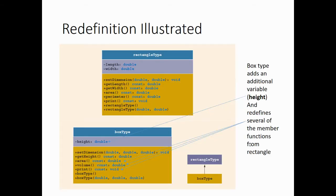For redefinition, imagine that we have a rectangle, and a specialized type of rectangle is a box. Box type has everything that rectangle type has but adds an additional variable, height. It redefines several of the member functions from a rectangle — we would calculate area differently, make a new member function for volume, and print a box differently than we print a rectangle. As you can see in the lower right, box type is basically a type of rectangle type.